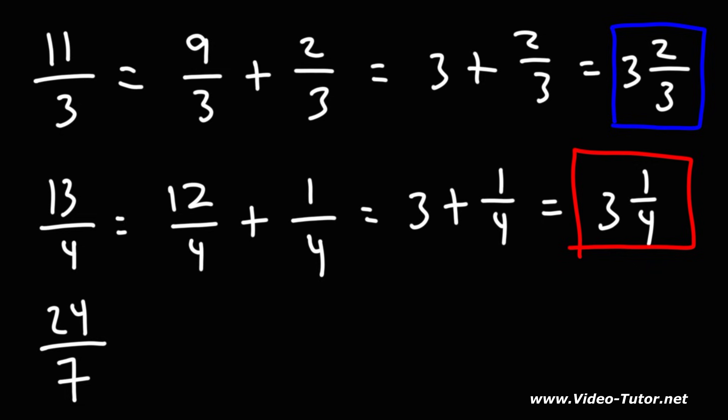So that's the answer for the second example. Now, for the third one, what is the highest multiple of 7 just under 24? That's going to be 21. 24 minus 21 is 3.